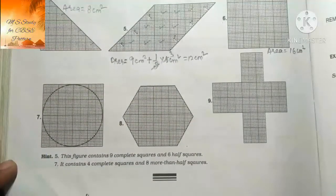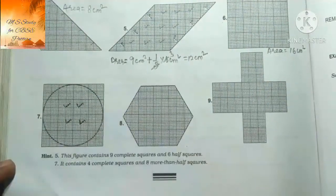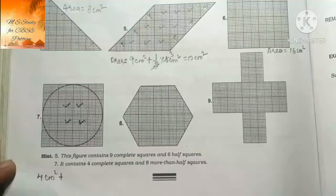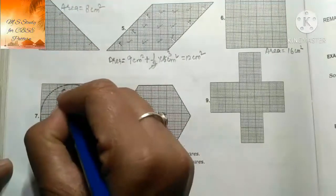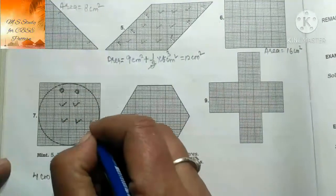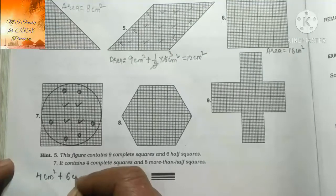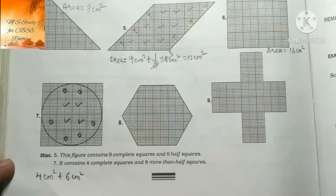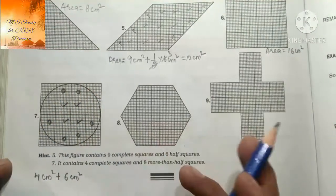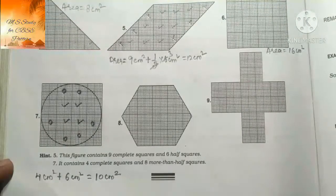7 वाले में पहले complete वालों को count कर लेते हैं - 4 complete squares। तो 4 cm² plus, अब more than half वालों को count कर लेते हैं। Circle बना रही हूँ - वो more than half हैं - 6 squares। यहाँ पर 6 cm²। Exactly half वाले एक भी नहीं है। तो हमारा answer आजाएगा 10 cm²।